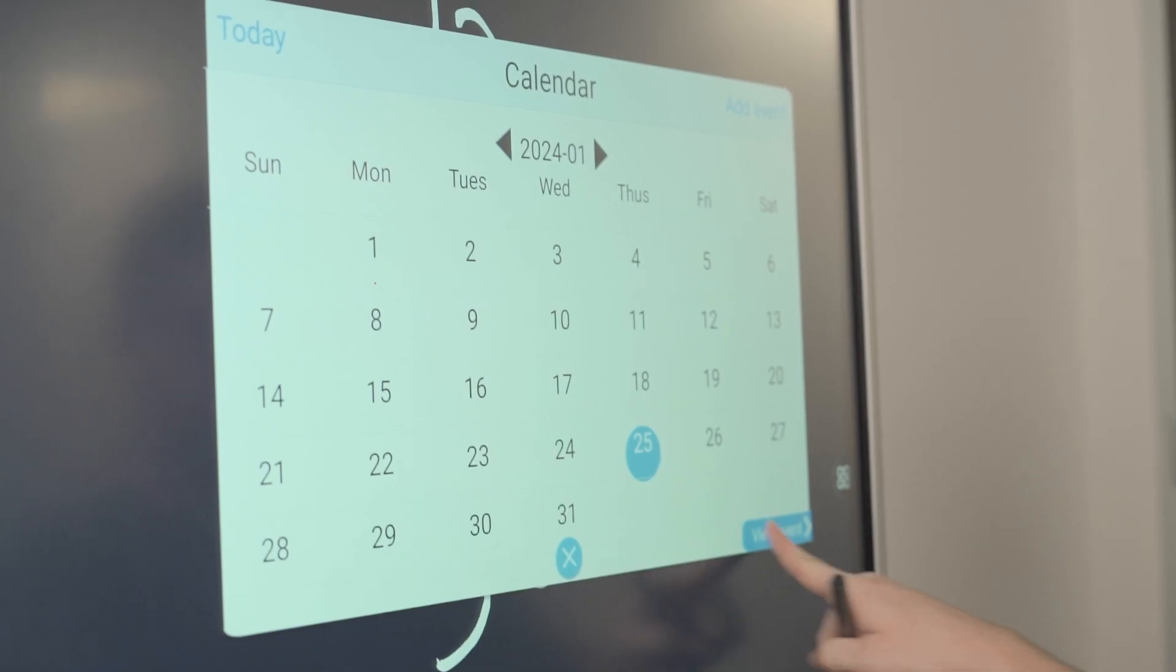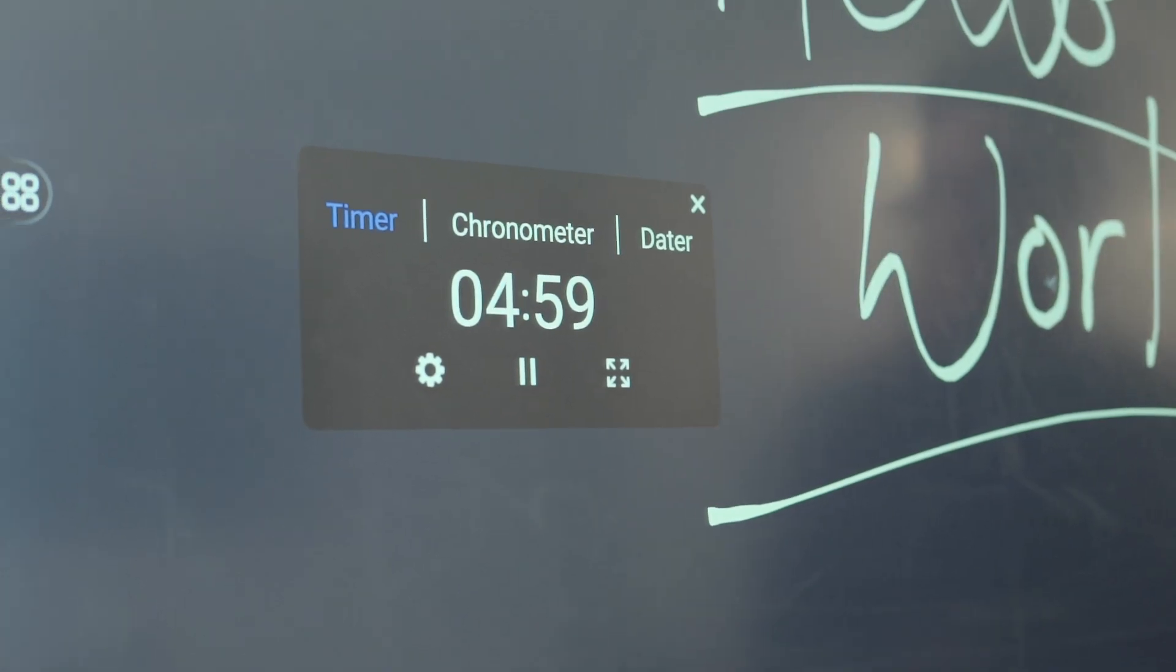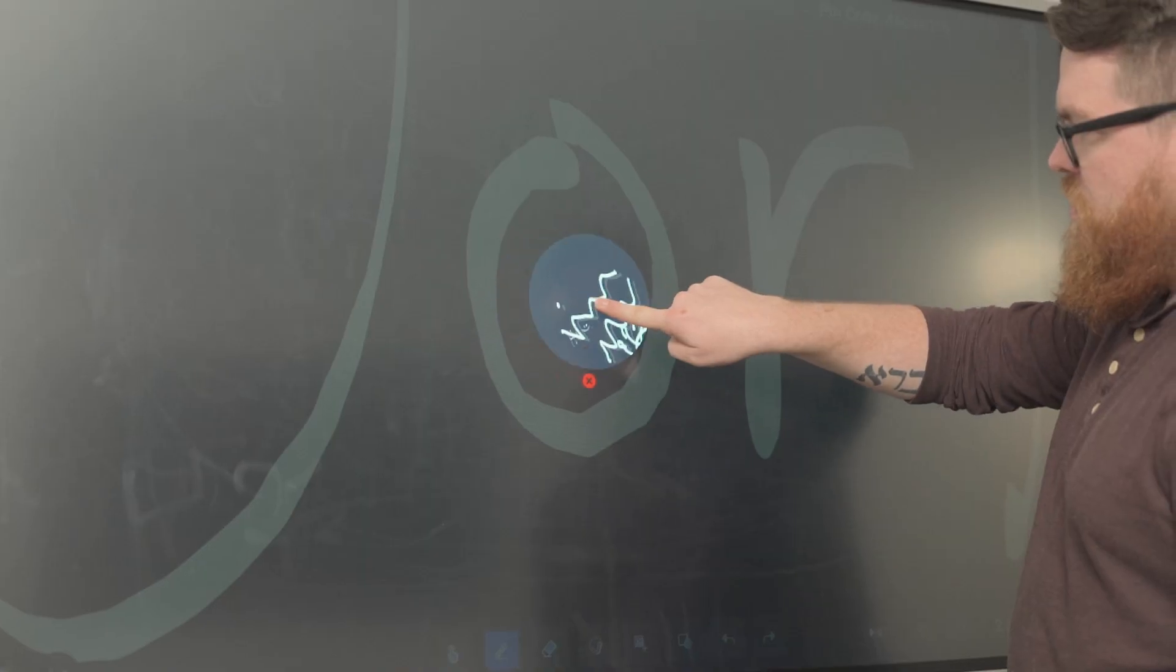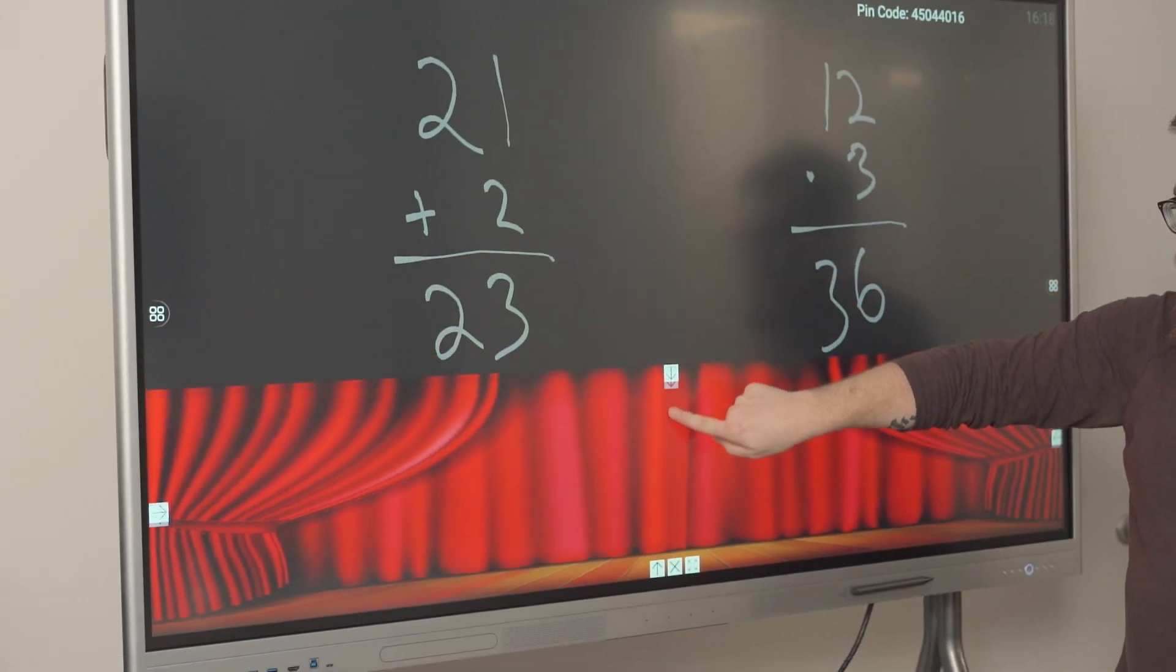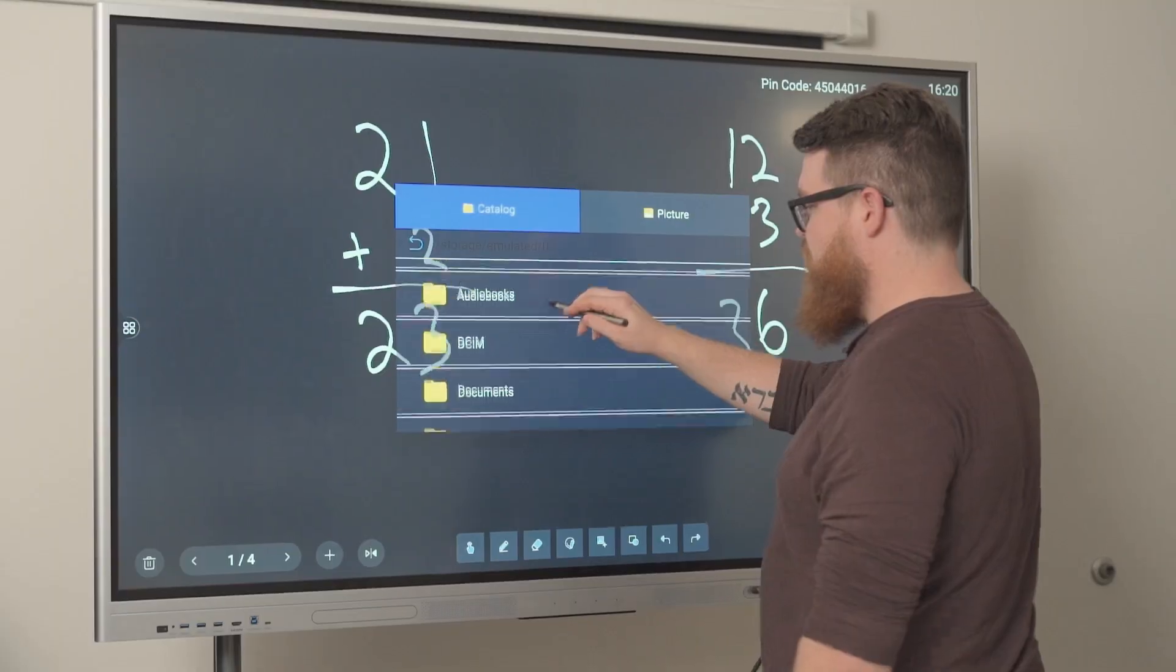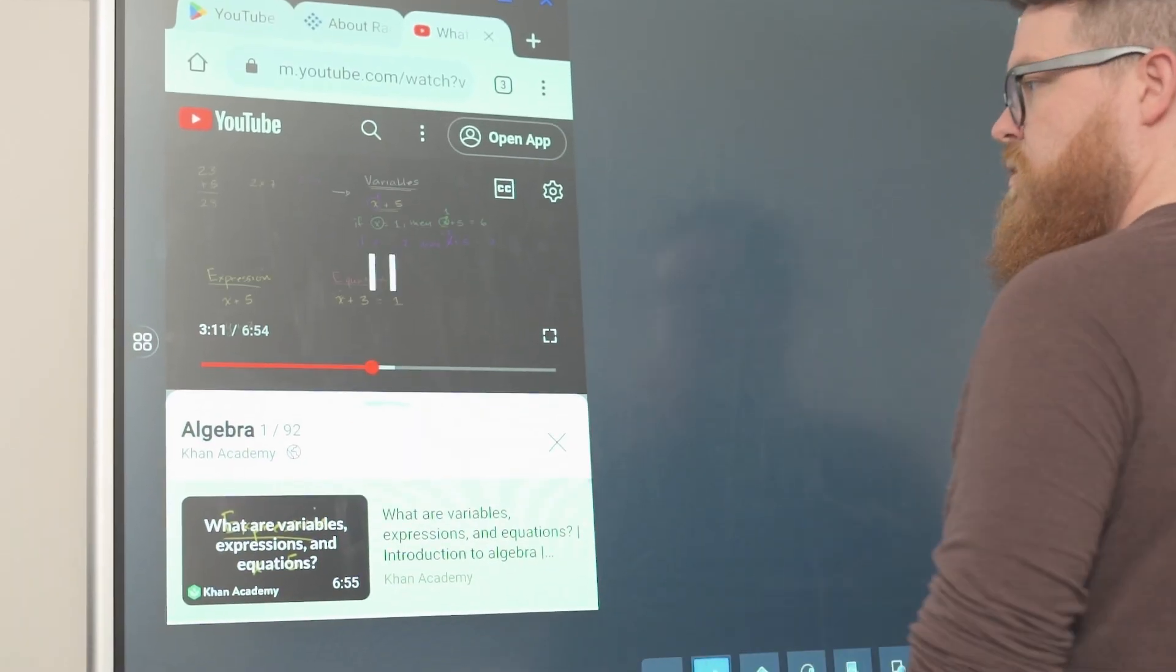There is a calculator, a calendar, countdown timer, spotlight, magnifier, curtain, you can pull up files, as well as access the web browser from the whiteboard.